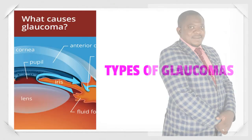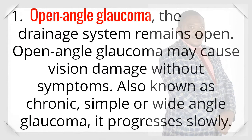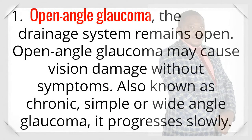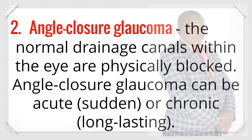Types of glaucoma. First, open-angle glaucoma: the drainage system remains open. Open-angle glaucoma may cause vision damage without symptoms. Also known as chronic, simple, or wide-angle glaucoma, it progresses slowly.